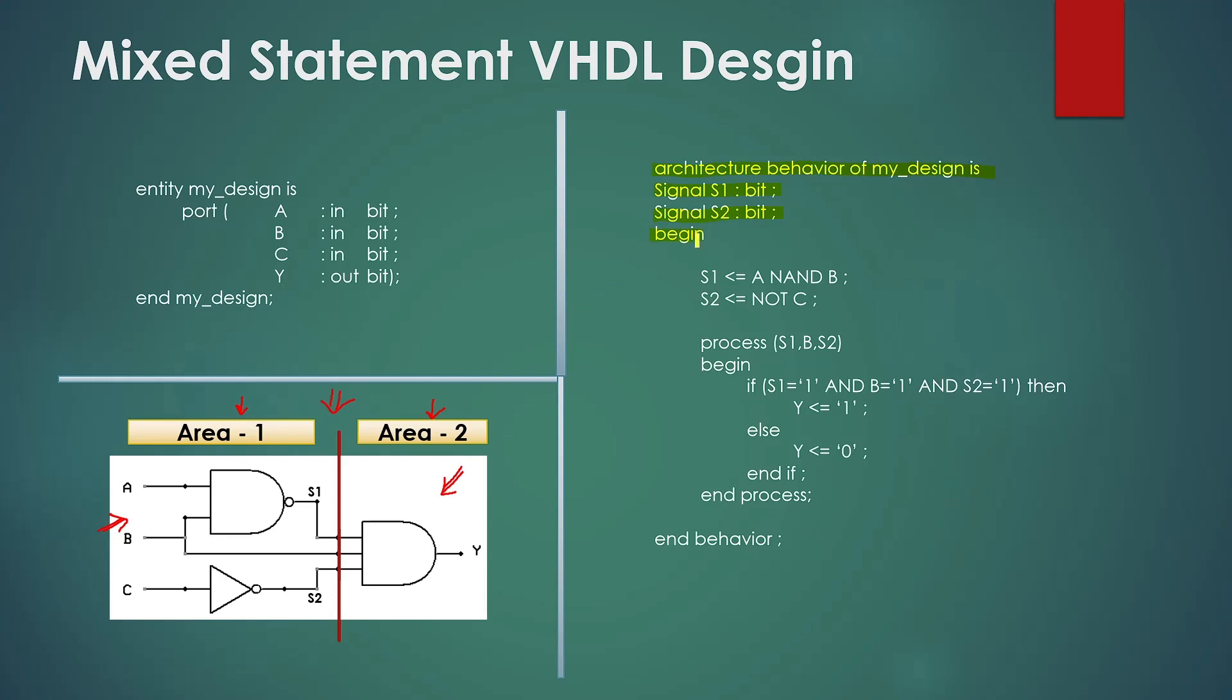Now write the concurrent statements for the area 1. These are: signal S1 gets the value of A NAND B semicolon. Then type signal S2 gets the value of NOT C semicolon.